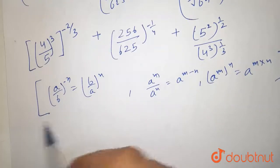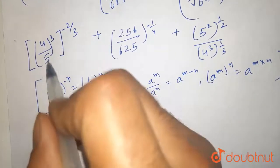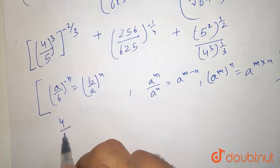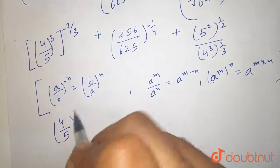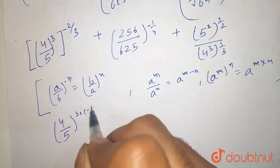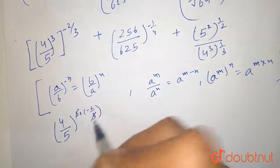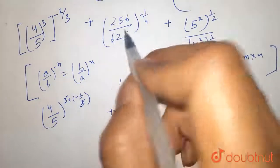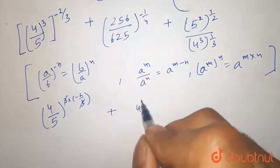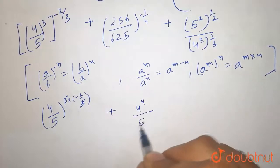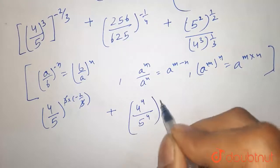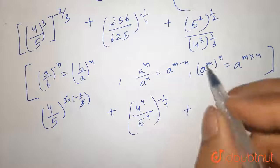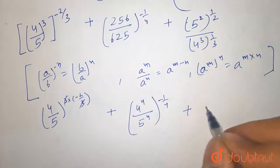So this becomes: power to power multiply, this becomes 4 by 5 raised to the power 3 into minus 2 by 3, so 3 and 3 cancel out, plus I can write it as 4 raised to the power 4 upon 5 raised to the power 4, and here power to power cancels out.